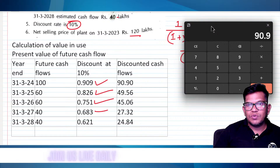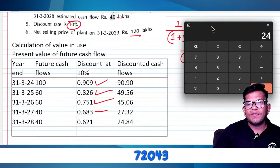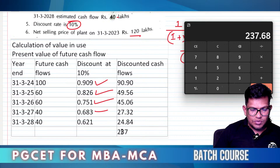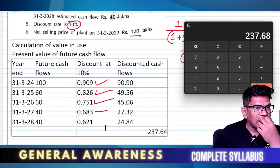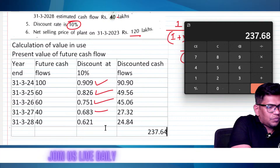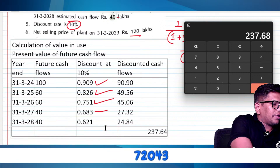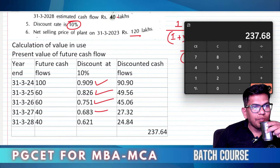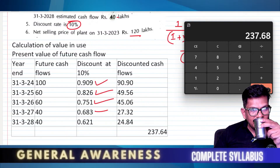Summing up the discounted cash flows: 90.90 + 49.56 + 45.06 + 27.32 + 24.84 = 237.64 lakh.